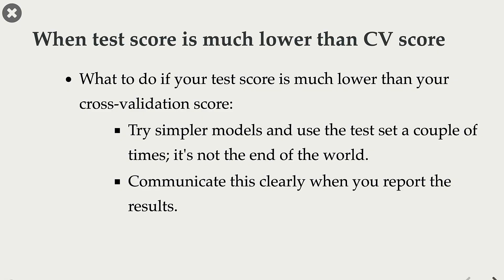What do you actually do when your test score is much lower than the cross-validation score? You have spent lots of time building and fine-tuning your model, but when you assess it on the test set, you find the test score is much lower than your cross-validation score. I would go back and reduce the complexity of the model — try simpler models which are likely to generalize well. Also, while I usually tell you to use the test set only once for final assessment, in scenarios like this it's okay to use the test set a couple of times. So I would go back, try different models, and carry out final assessment on the test set again.